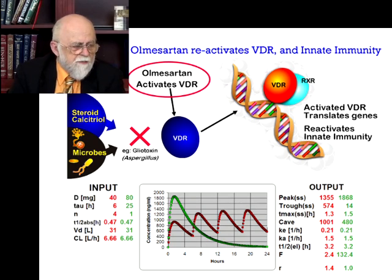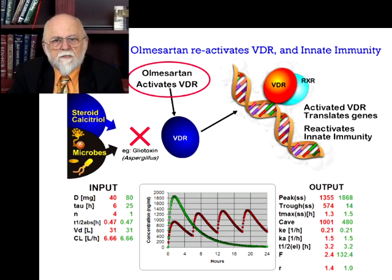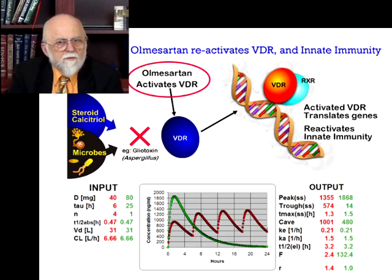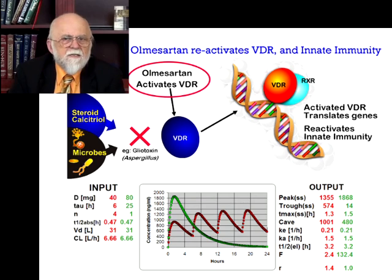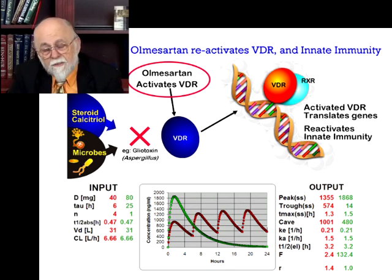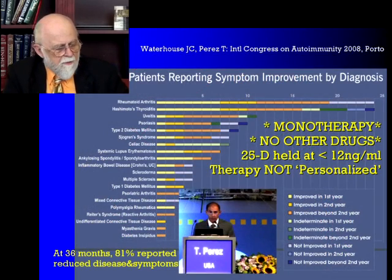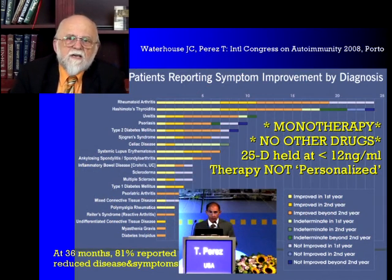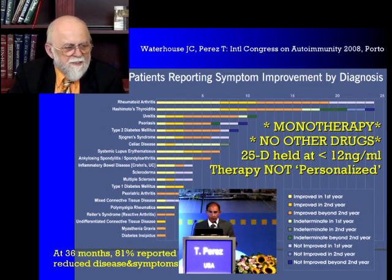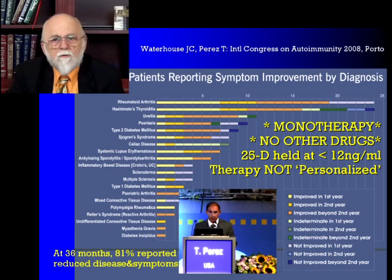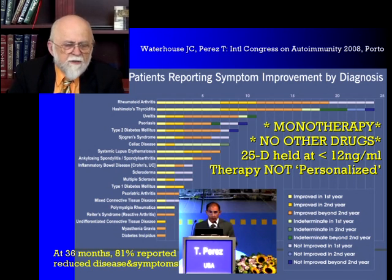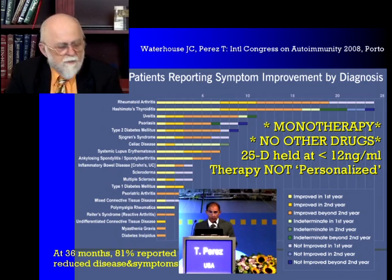The normal way the VDR is activated is by the steroid calcitriol, generated within each cell — but the microbes block that. For example, Aspergillus produces a toxin called gliotoxin that stops calcitriol from activating the VDR. The microbes all have different ways of doing it, but the bottom line is the VDR is knocked out — it's very low in chronic disease. By reactivating it, we showed we were able to change the outcome in a whole slew of chronic diseases. This chart, reported at Porto, shows from rheumatoid arthritis to diabetes insipidus all responding at a rate of about 81% after 36 months — on monotherapy with just olmesartan, no other drugs.